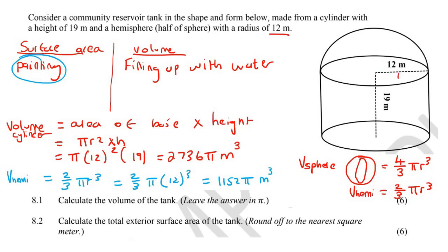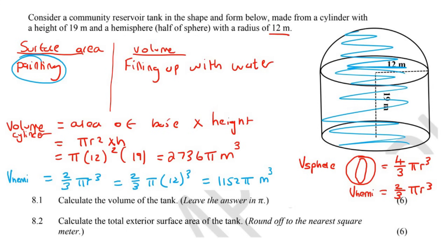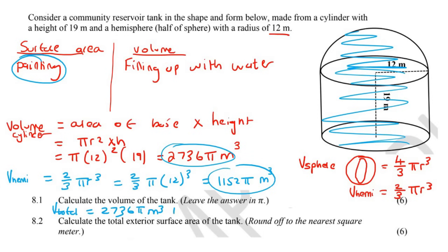Now with volume, it's very easy. If you filled up all the water for the cylinder part, and then for the hemisphere you filled up the water there — if you just add the two values, that'll tell you the total volume. So the total volume V total will just be 2736π meters cubed plus 1152π, and so if we add that up, we get 3888π meters cubed.